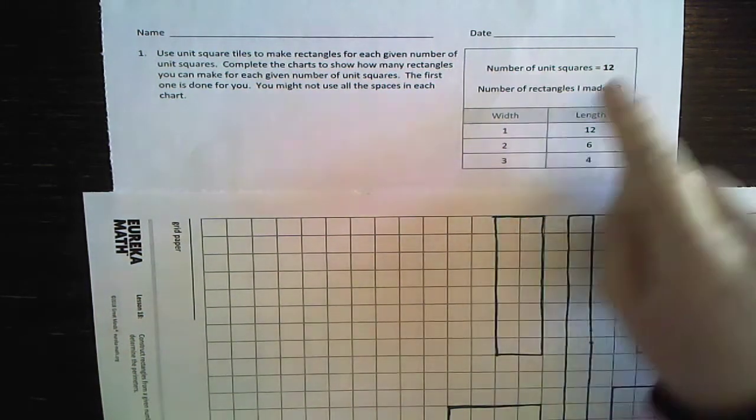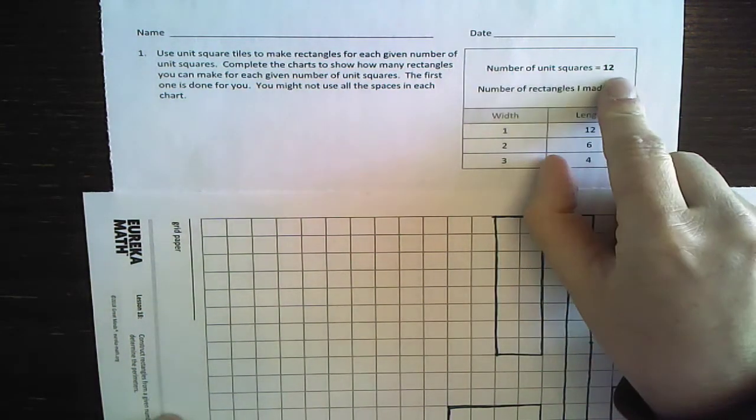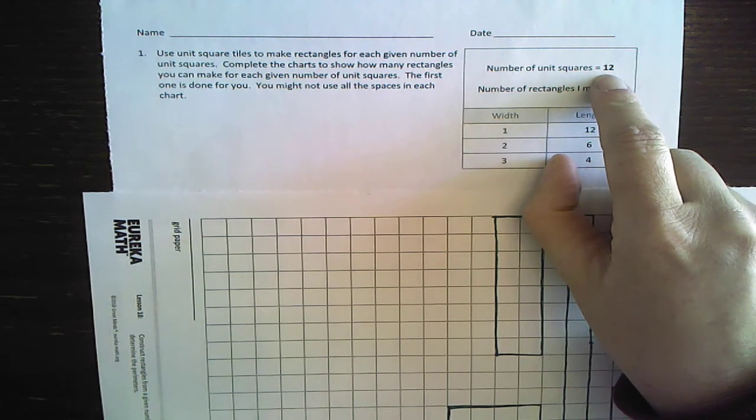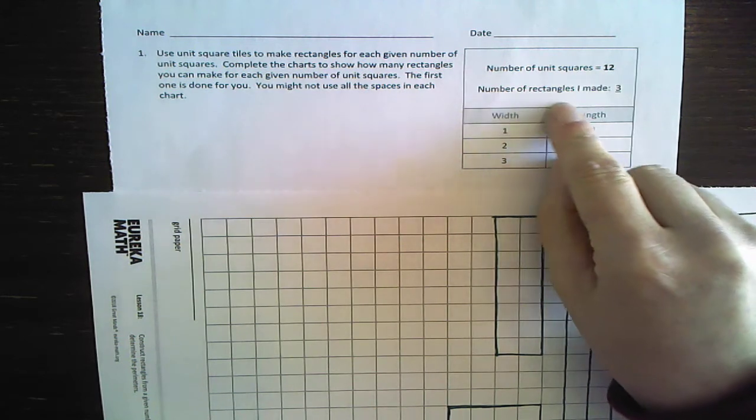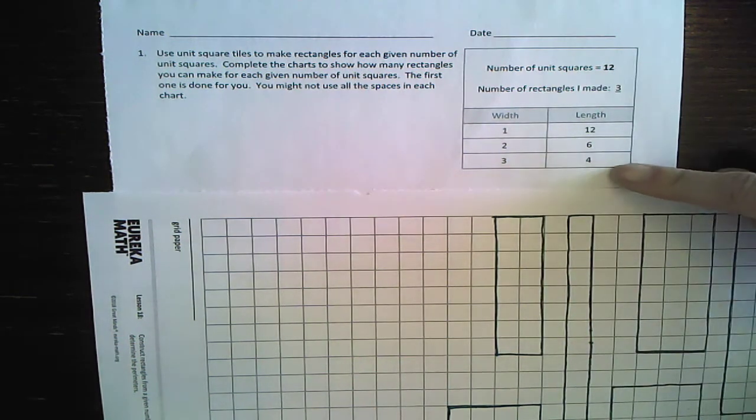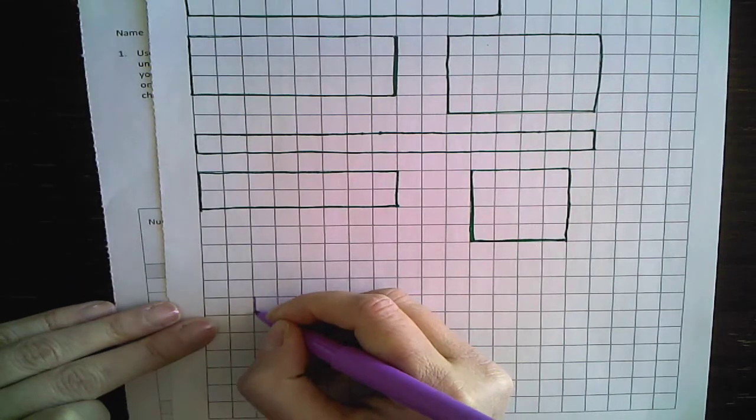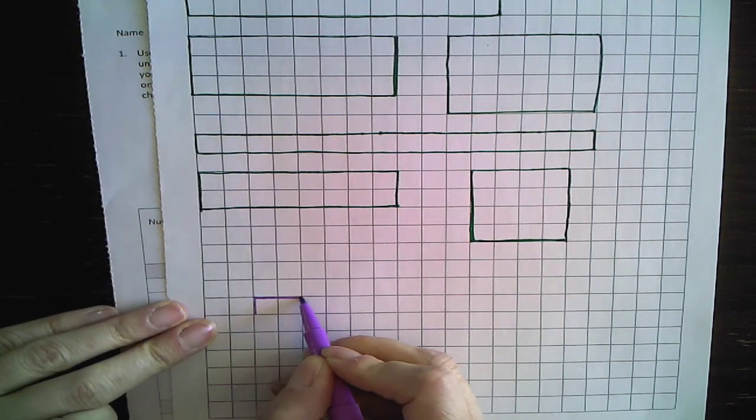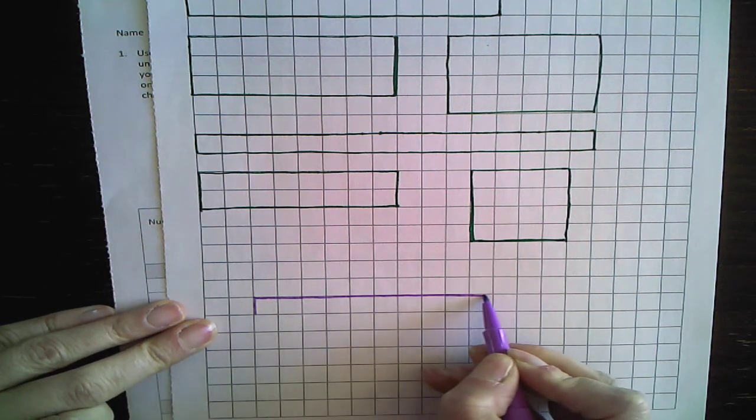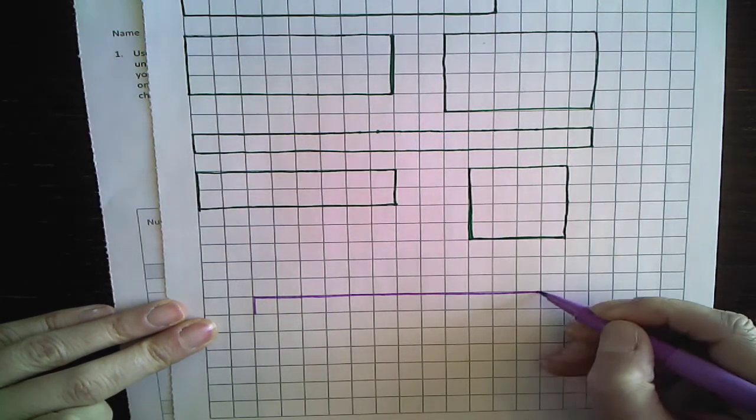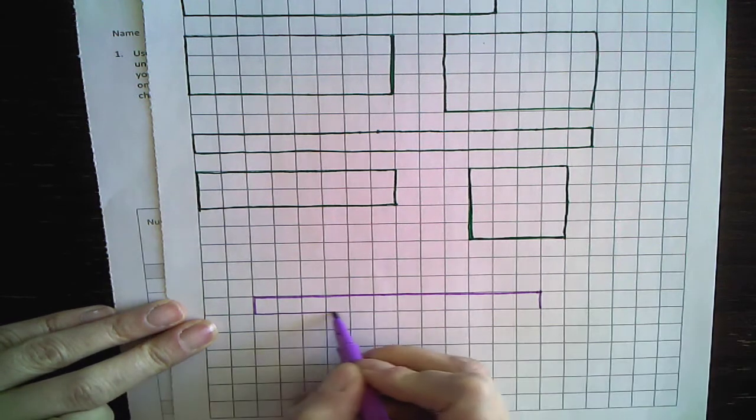You see how when they did the number of square units, right? So this is kind of like the area, not kind of, it is. This is the area. The area is 12. The number of rectangles I made, one, two, three. So the width, for example, right? The width is going to be one, and then you're going to go 12, one, two, three, four, five, six, seven, eight, nine, 10, 11, 12. So now we have 12. This is the rectangle that they made.